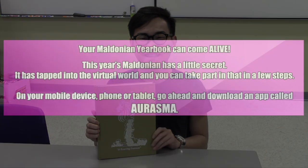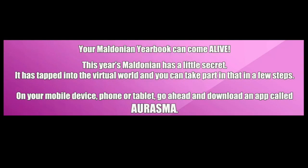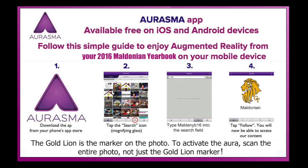Here's James with his 2016 Maldonian yearbook. James is about to find out that his yearbook can come alive using any mobile device and an app called Erasmur, which you need to download. Erasmur is free for iOS and Android devices, so you'll need to go to an app store and download it to use the augmented reality in your 2016 yearbook.